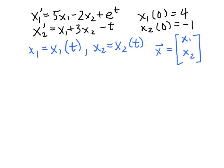Now because x1 and x2 are functions of time, we can take their derivatives with respect to time. So I could look at a vector that contained the derivative of x1 and the derivative of x2 as its components, and we'll call that vector x prime.